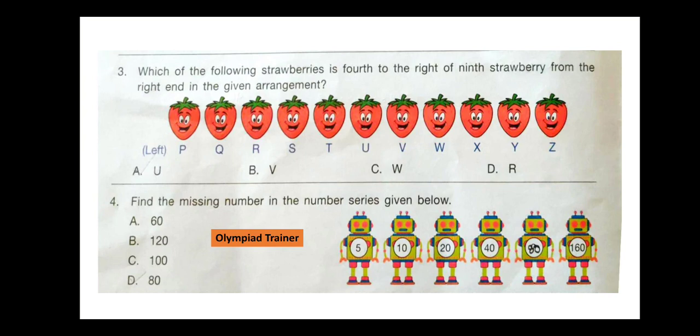Question 4. Find the missing number in the number series given below. The number series is 5, 10, 20, 40, ?, 160. The correct answer is option D — 80.